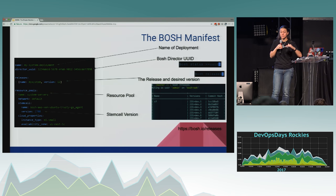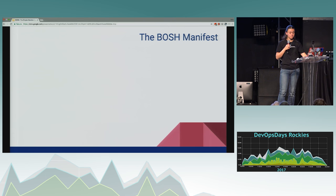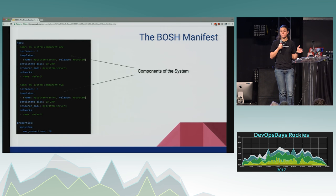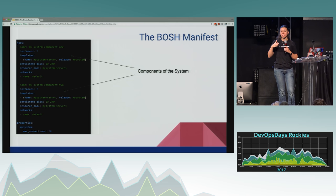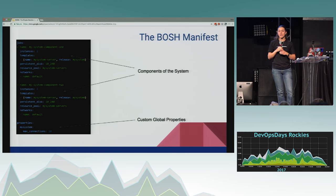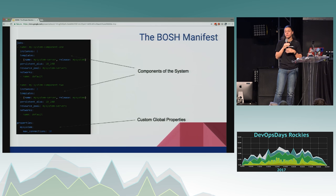The stemcell version is also defined in the resource pool — you can quickly get a new stemcell, upload it to BOSH, change your manifest to use it, do BOSH deploy, and it will redeploy everything with the new stemcell. Your jobs define individual components of your system, their resource pool, what network they use, and specific properties. Instead of reading in a system environment variable, you set it here and BOSH translates it to your component. You can also set global properties, like max connections for every component, so you don't have to write it ten different times.